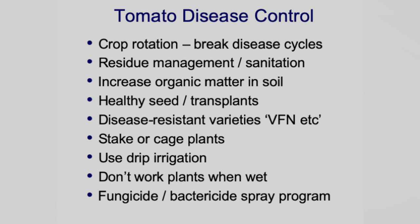Disease-resistant varieties are key in my opinion. You need to stake or cage your plants to keep them off the ground. I recommend using drip irrigation — if you start sprinkler-irrigating you're going to spread a lot of diseases. Try to avoid working the plants when they're wet. If you want to control diseases with a fungicide or bactericide, you've got to get on a preventive spray program — I would recommend starting before the problems show up, typically around bloom or early fruit set when the foliage looks good.